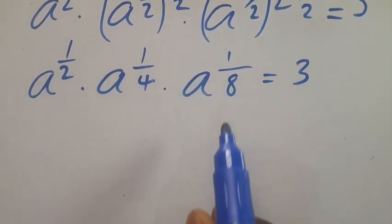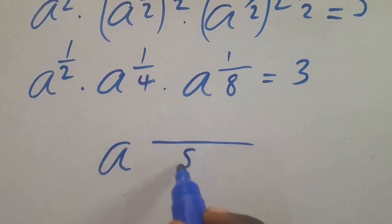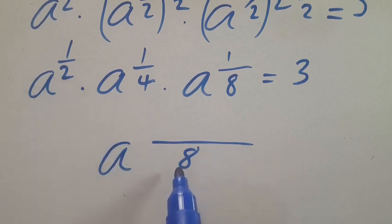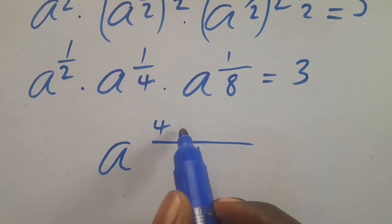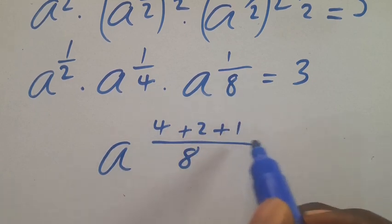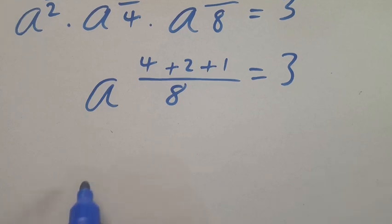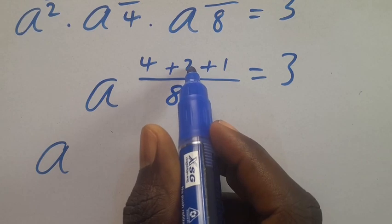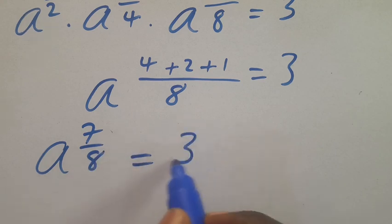We find the LCM of the denominators 2, 4, and 8, which is 8. So: 2 into 8 gives 4, 4 into 8 gives 2, and 8 into 8 gives 1. We get a to the power of 4 plus 2 plus 1, all over 8, which is a to the power of 7/8 equals 3.